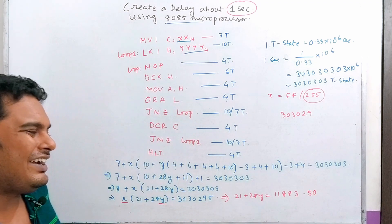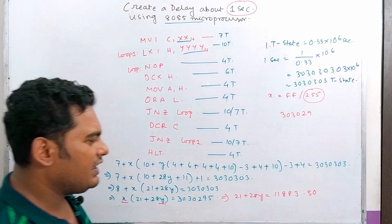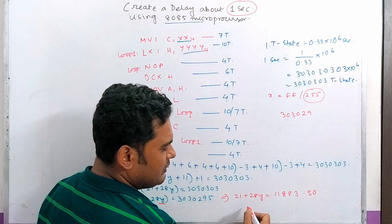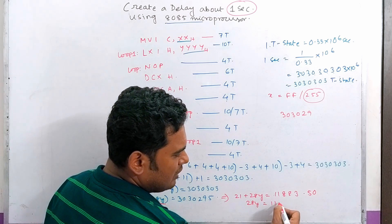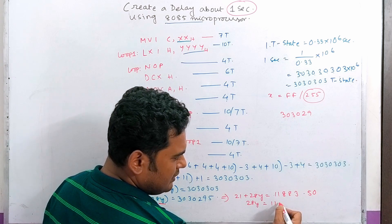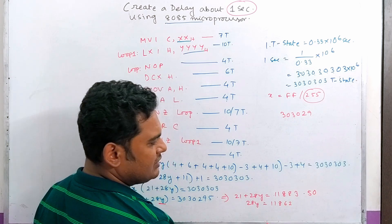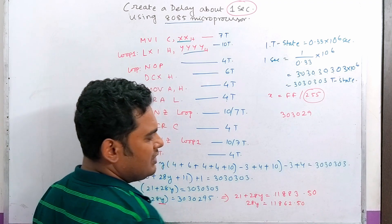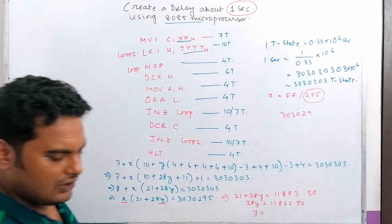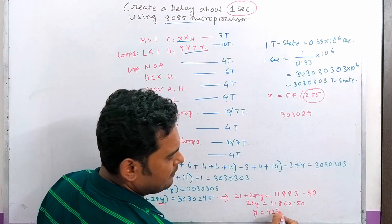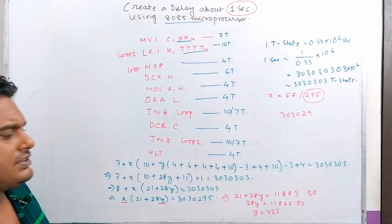We discard the fractional part. So 28Y = 11,883 minus some correction. That gives 28Y = approximately 11,862, and Y equals approximately 423. So Y equals approximately 423.